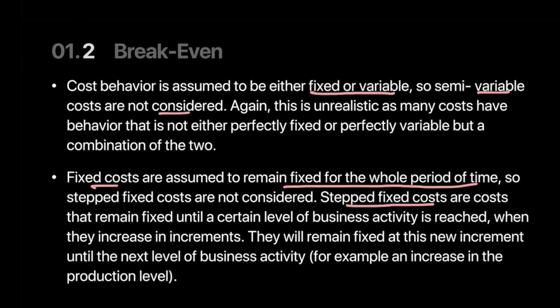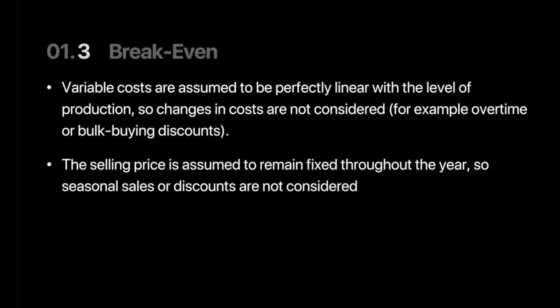Finally, we're assuming variable cost will remain linear with the level of output, but when a firm increases its bulk buying they often get discounts — which we're not considering. We're also assuming selling price to remain fixed, whereas in reality there are seasonal discounts and price fluctuations. Our assumption is that both selling price and variable cost remain constant over time. I think we've covered a good portion of the breakeven analysis.